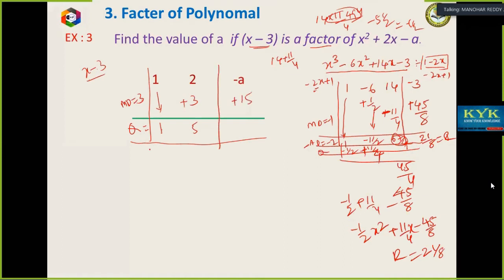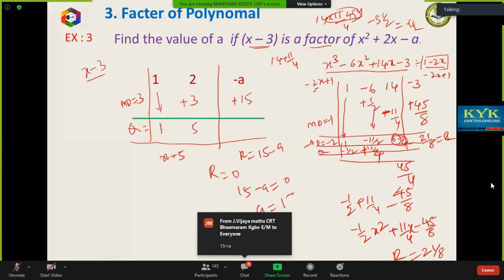The question is x plus five is three, so remainder is 15 minus a. It is a factor, so when it is a factor, R is zero. Therefore, 15 minus a equal to zero, a equal to 15.